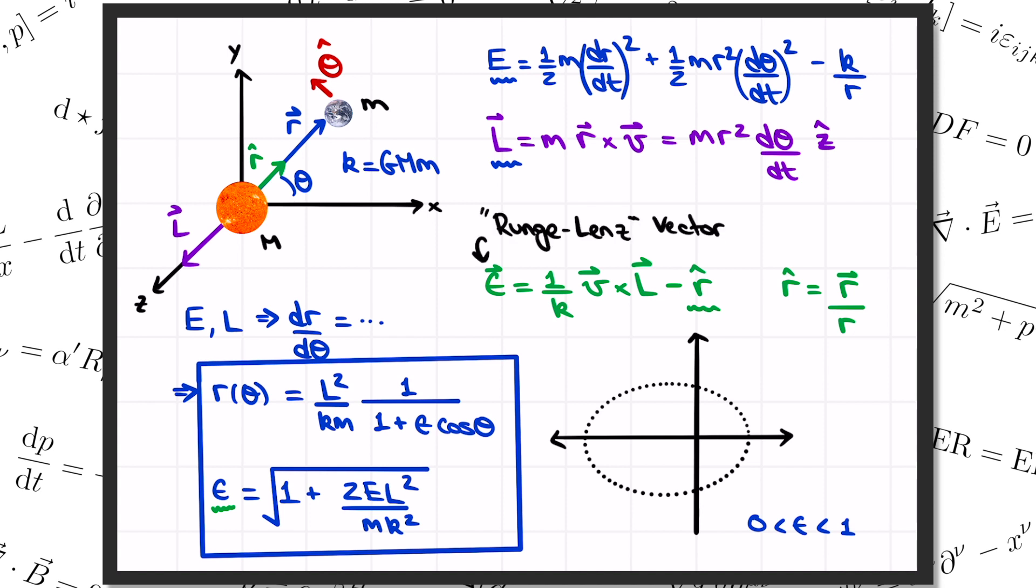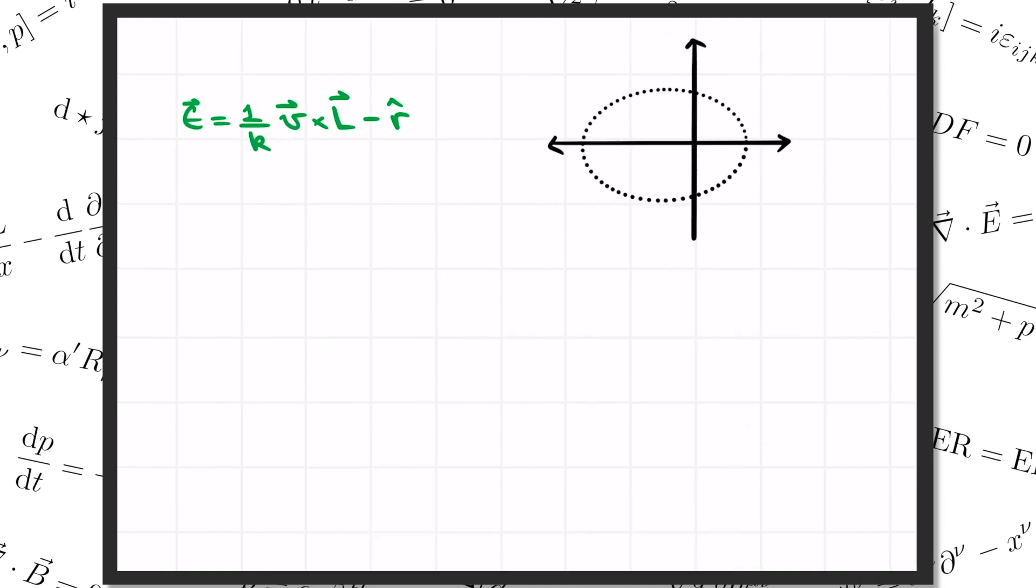So what is this random vector epsilon that we call the Runge-Lenz vector? Well, let's evaluate it at the moment when the planet is at its point of closest approach to the star. We can always set up our coordinates so that the planet is on the x-axis when that happens. At that instant, r hat equals x hat is just the unit vector pointing along the x direction. Meanwhile, the velocity of the planet is all along the angular direction at that moment which coincides with the y-axis. L, of course, is always pointing in the z direction. So what are we going to get over here for epsilon? Well, again, r hat is equal to x hat at this instant.